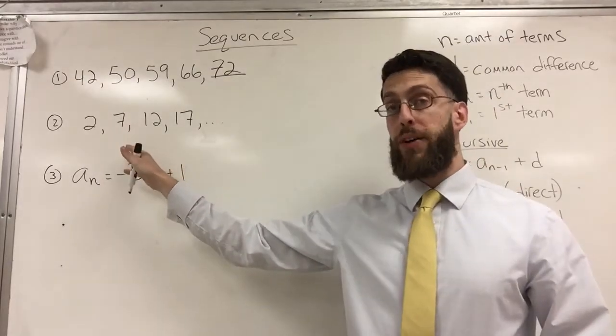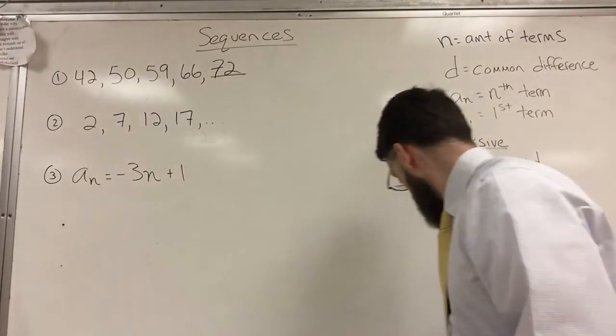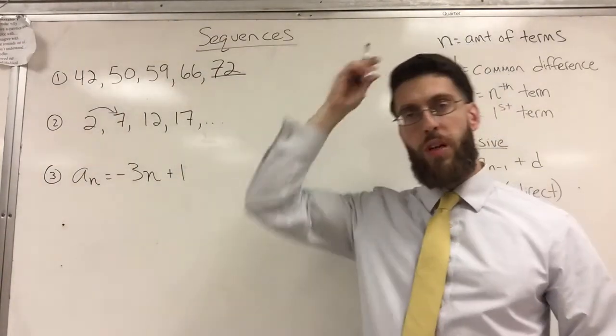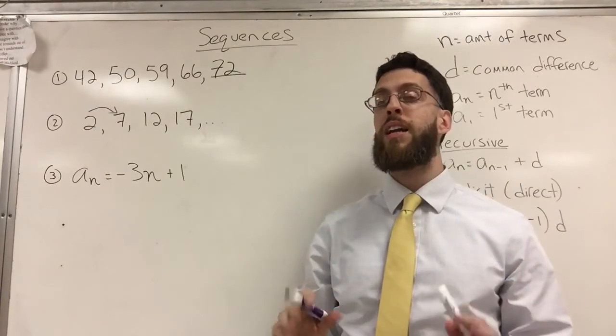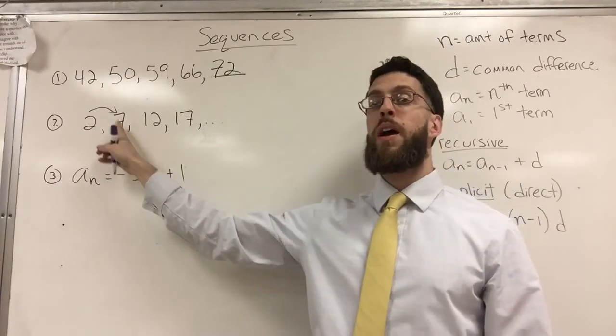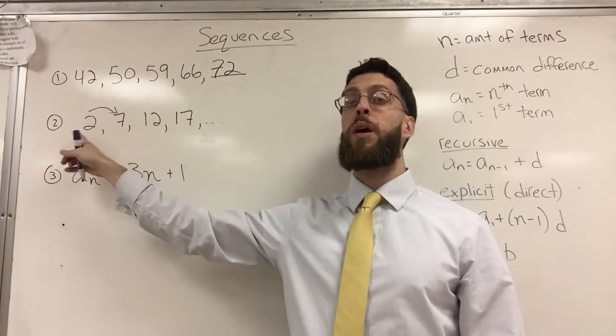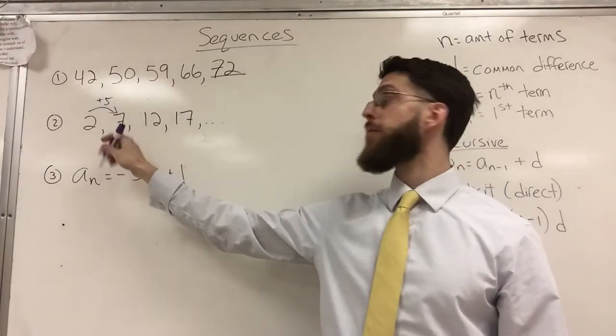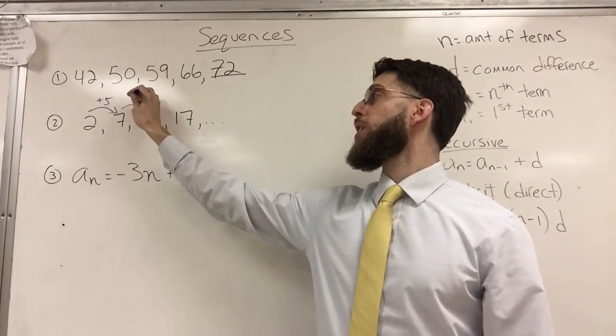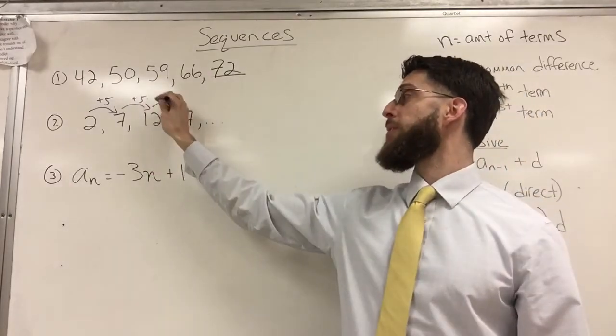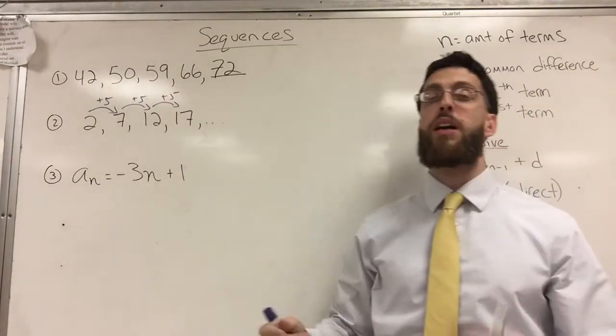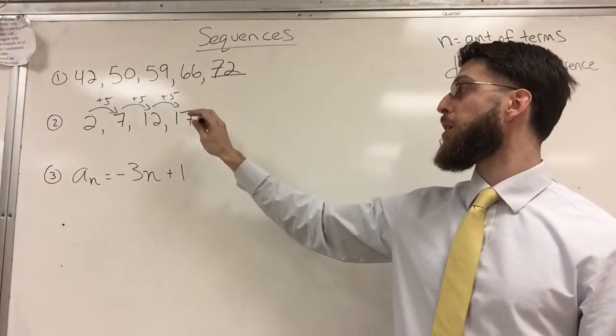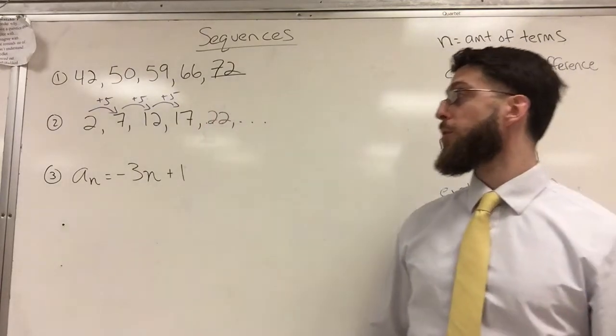Here is actually a pattern. Let's take a look. From 2 to 7, how do I get there? A good idea is to take the second term and subtract the first term. I would do 7 minus 2, and I have to add 5. Then I would do 12 minus 7, I have to add 5 again, and add 5 again. So my pattern is I'm adding 5 every time, so the next one would be 22.